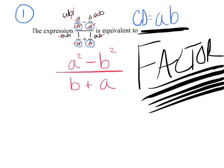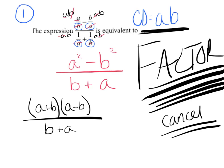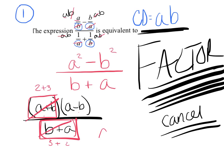Ask yourself: can the top get factored? A squared and B squared with a difference — that's the difference of two perfect squares. So factor the top to A plus B and A minus B. Can the bottom get factored? It's not a difference of two squares and there's no GCF, so leave it as B plus A. Now you can cancel. A plus B and B plus A are the exact same terms — if you pick numbers for A and B, 2 plus 3 equals 3 plus 2. So those cancel, and the final answer is A minus B.